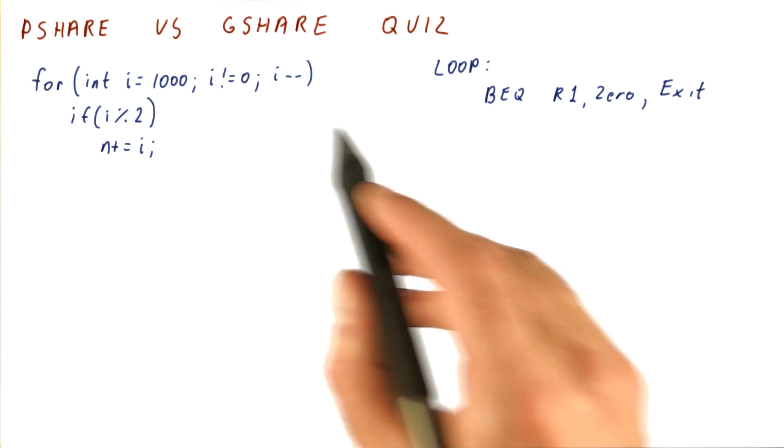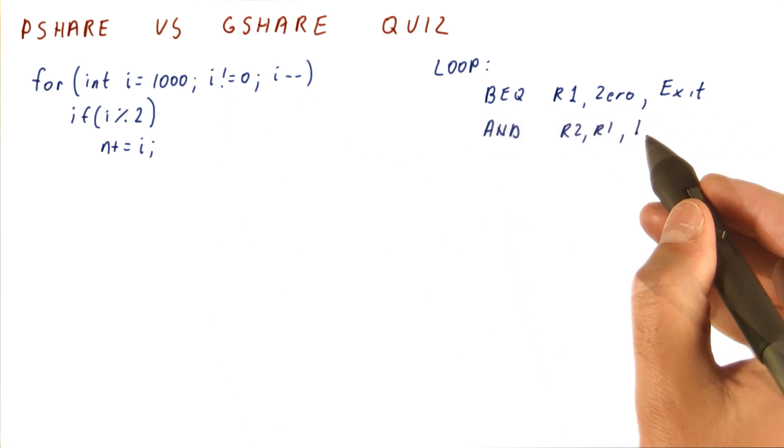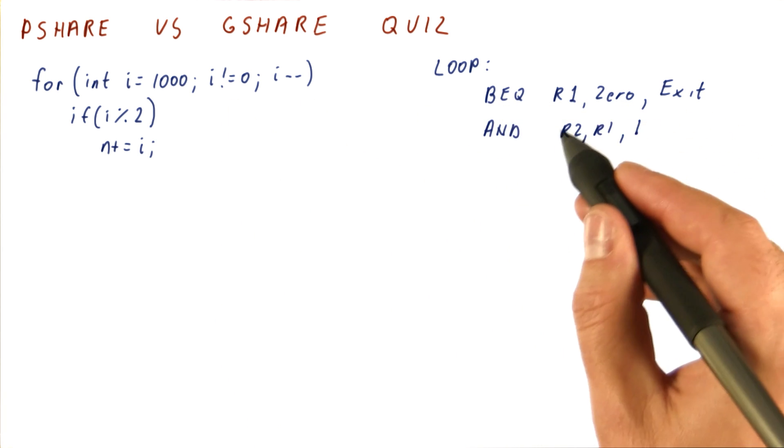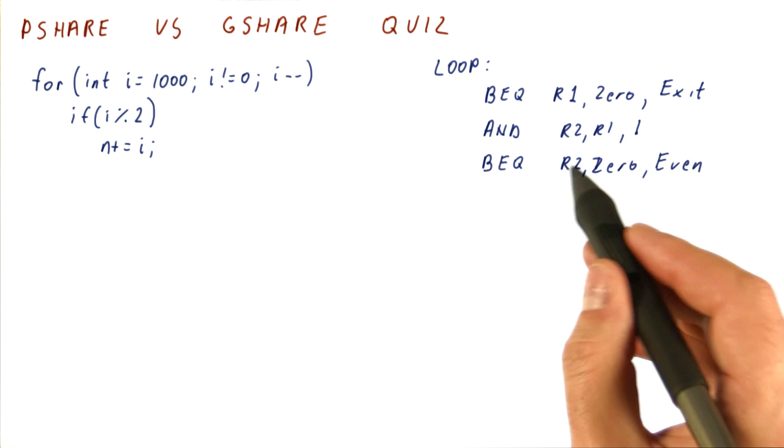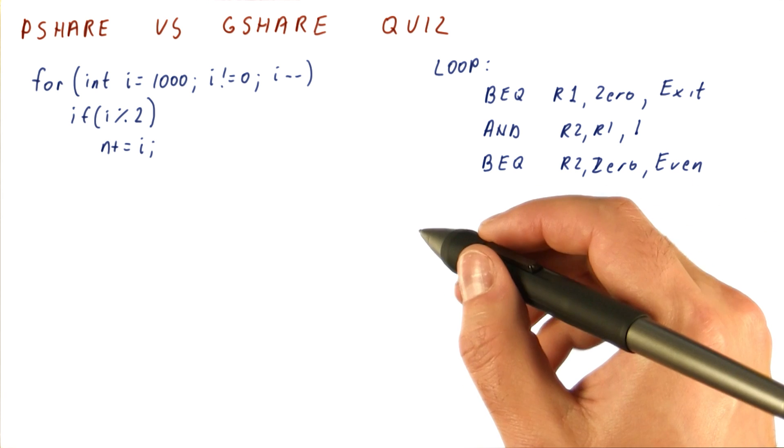This branch here is the test for exiting this loop when r1 is 0. This is testing the least significant bit of r1. And if that bit is 0, that means we have an even number, so we jump to the even label.